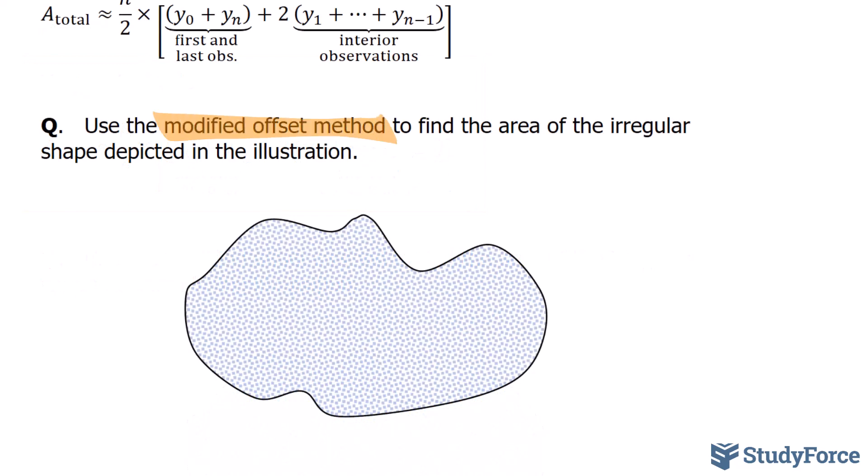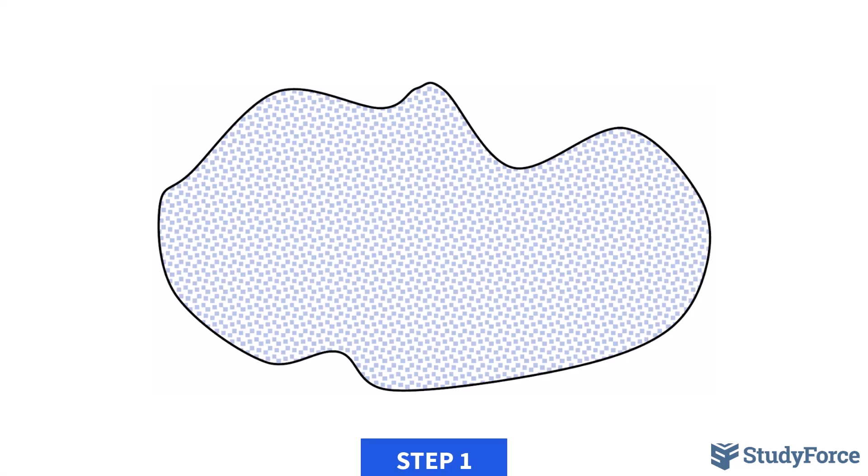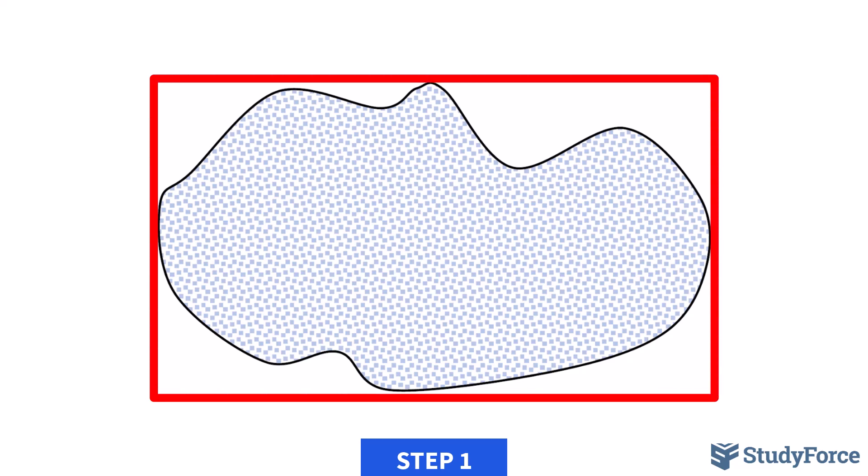Now, in this video, our goal is to use the modified offset method to find the area of the irregular shape shown on your screen. Let's begin with step number one. The very first step involves placing the irregular shape inside a surrounding rectangle aiming for a snug fit.